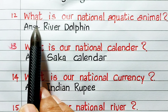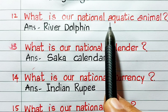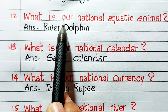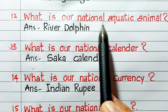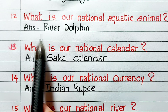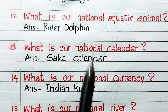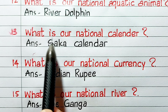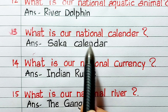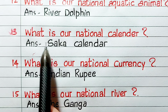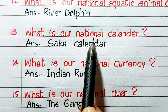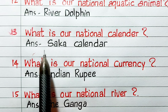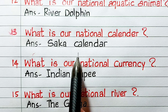Next one, what is our national aquatic animal? Next one, what is our national calendar? Answer: Saka calendar.